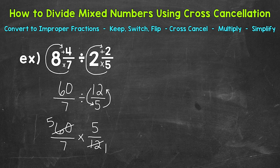We can also look diagonally the other way — between 7 and 5. The only common factor between 7 and 5 is 1, so we can't use cross cancellation with the 7 and the 5.